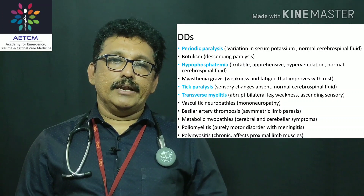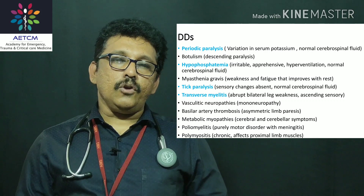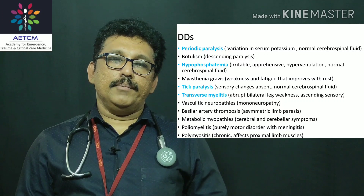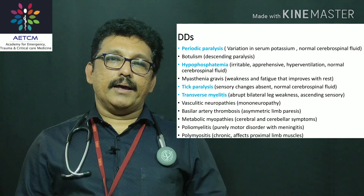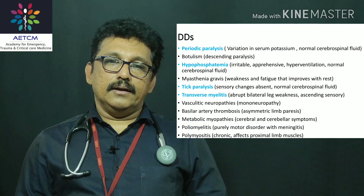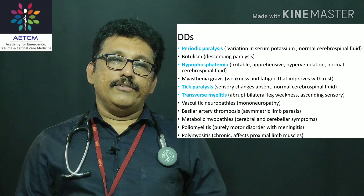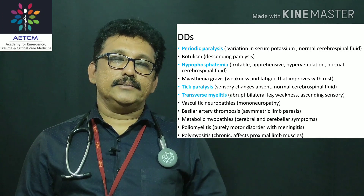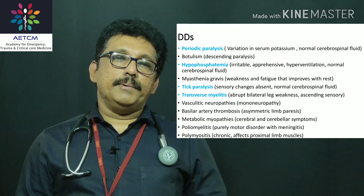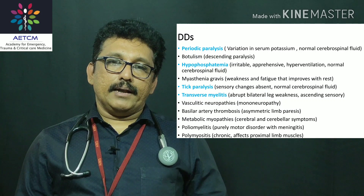The major differential diagnoses for GBS include: hypokalemic periodic paralysis, where potassium is very low and the patient suddenly develops flaccid paralysis in all limbs — it is not progressive; hypophosphatemia, which is similar but less common; botulism, which causes descending paralysis starting from the larynx and pharynx; tick paralysis; transverse myelitis, which presents with acute flaccid paralysis but has a defined sensory level; and myasthenia gravis, an incremental weakness worsening from morning to evening. The most important differential is hypokalemic periodic paralysis.